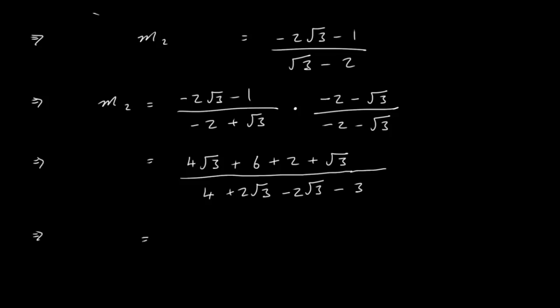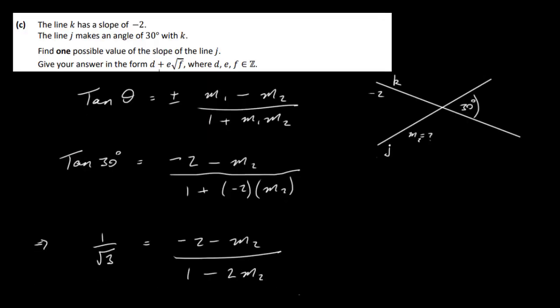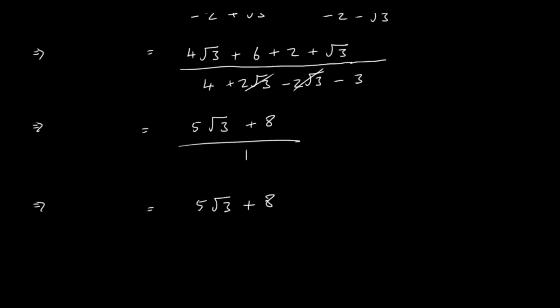OK, so we're getting there. So we've got 4√3 + 1√3, so that's 5√3. That's 6 + 2 which is 8. And then on the bottom we've got 4 - 3. These two will just give us 0. So our final answer then is divided by 1. So it's just going to be 5√3 + 8. Now we have to write this in the form D + E√F. So we've just got to switch these around: 8 + 5√3. OK, and that's it for this question.